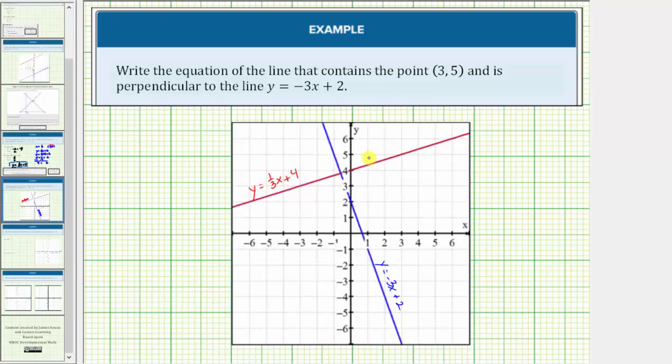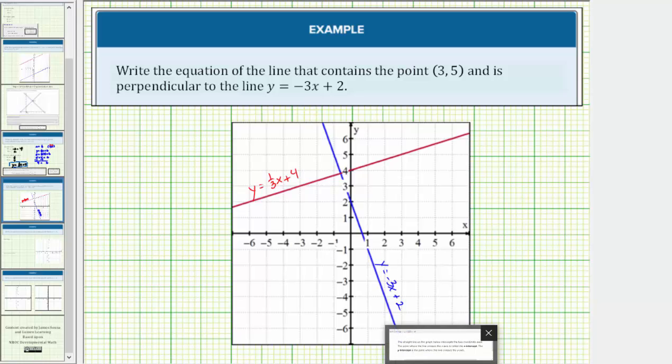Let's verify this graphically. The graph of y = -3x + 2 is shown in blue, and the graph of the equation we just found, y = (1/3)x + 4, is shown in red. Notice how these two lines appear perpendicular. They intersect and form a 90-degree angle, which verifies our work is correct.